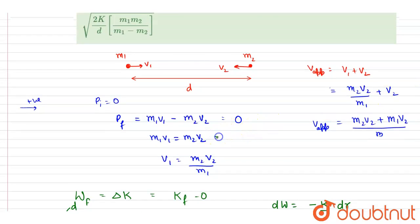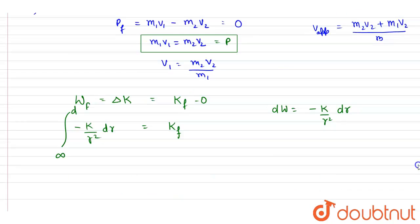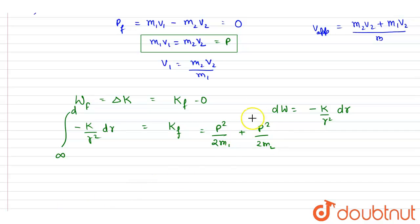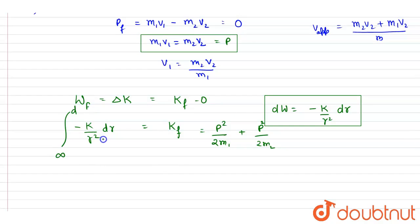Since both particles have equal magnitude momentum p (as m1*v1 = m2*v2 = p), the final kinetic energy can be written as p²/(2m1) + p²/(2m2). Integrating the force from infinity to d: r to the power minus two integrates to r to the power minus one, and with the negative signs the result gives k/d.